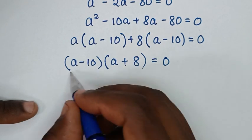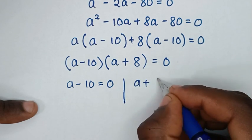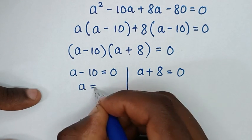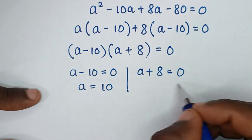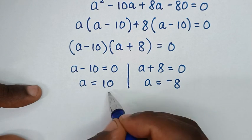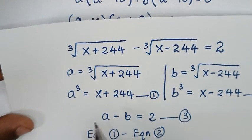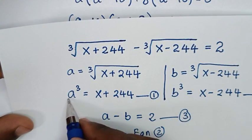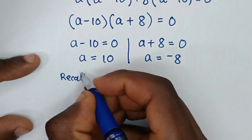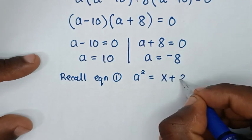From this we have two solutions: a minus 10 equals 0, giving a equals 10; and a plus 8 equals 0, giving a equals negative 8. We don't need the value of b. We'll use equation 1, which is a³ equals x plus 244, to find x.